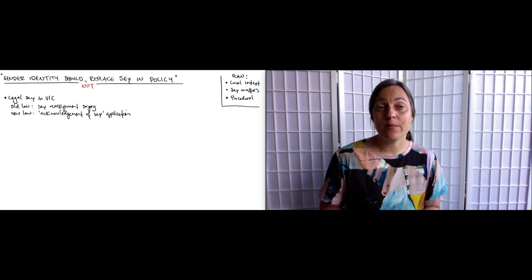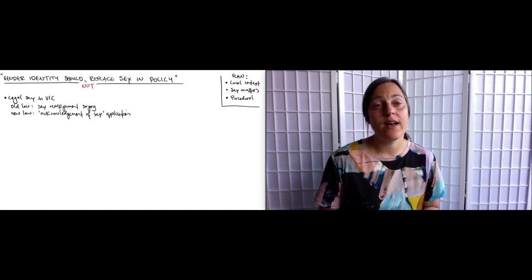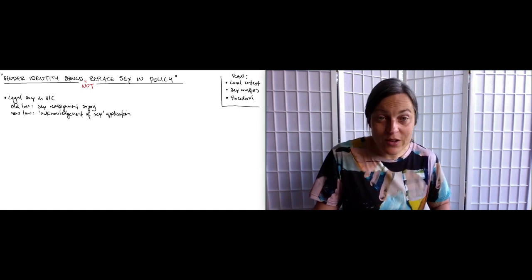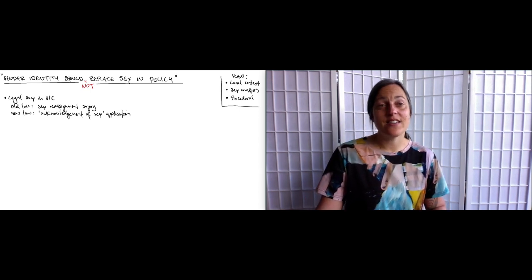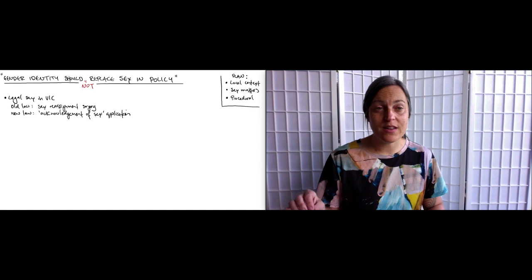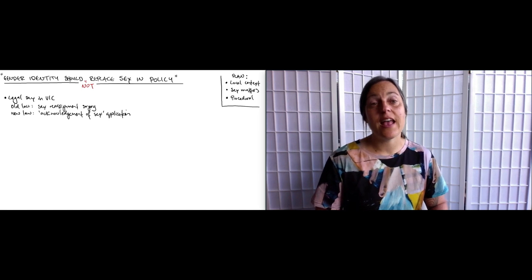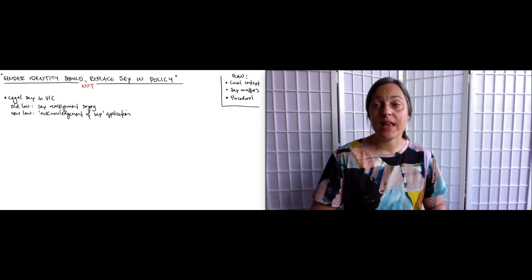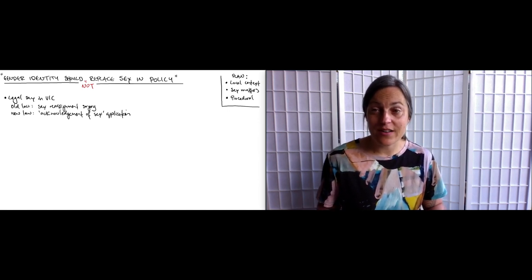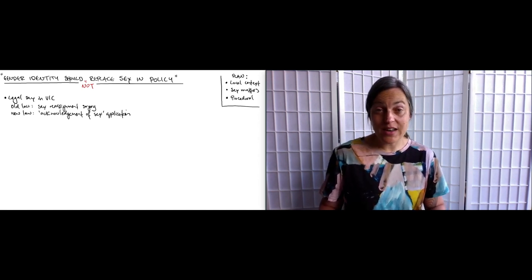The births deaths and marriages registration amendment bill 2019, for short the BDMRA, removed that requirement and replaced it with an acknowledgement of sex application. This application simply requires a statutory declaration to the effect that one believes one's sex to be as nominated. So for example a male person applying to have his legal sex changed to female must make a statutory declaration saying he believes he is female. The application also needs a supporting statement from one other person saying that the application is being made in good faith and that the person supports it. And such applications can be made as often as once a year.